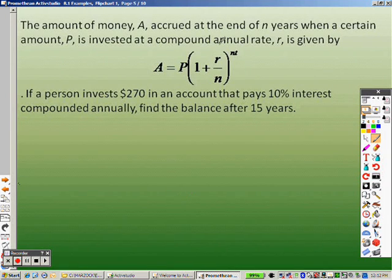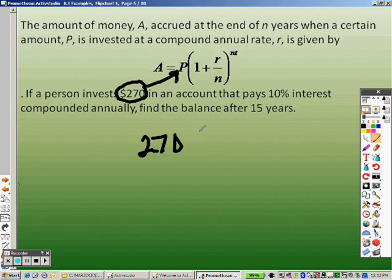Okay, so the amount of money accrued at the end of n years when a certain amount P is invested into a compound annual rate r is given by this. So here's your formula. If a person invests that much money, this right here, that's your P. So I know it's 270 goes in there.